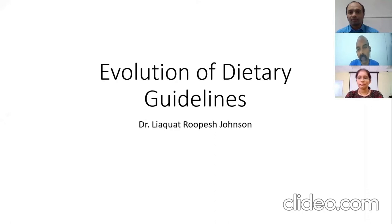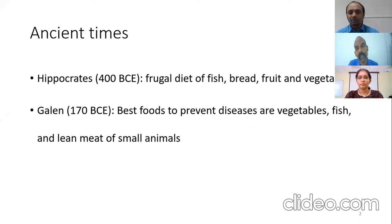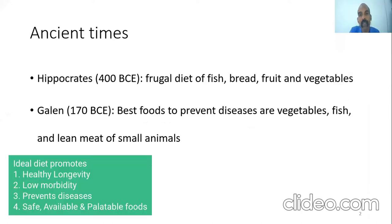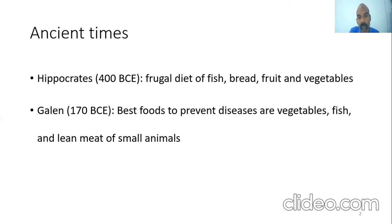I will be covering a brief history of dietary guidelines and how they have evolved over time. The basic idea of providing dietary guidelines is that an ideal diet promotes healthy longevity, low morbidity, prevents diseases caused by either deficiency or excess of specific nutrients, and is composed of foods that are safe, available, and palatable. Over time, our notions of healthy food and food beliefs have influenced dietary guidelines.